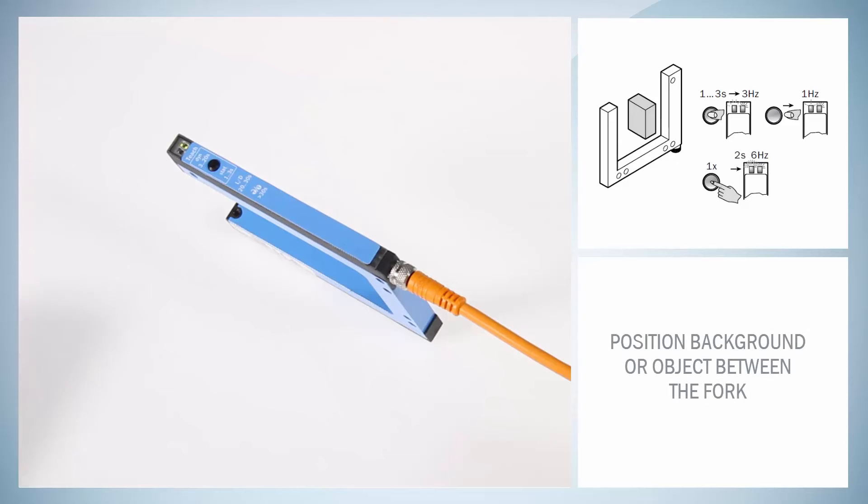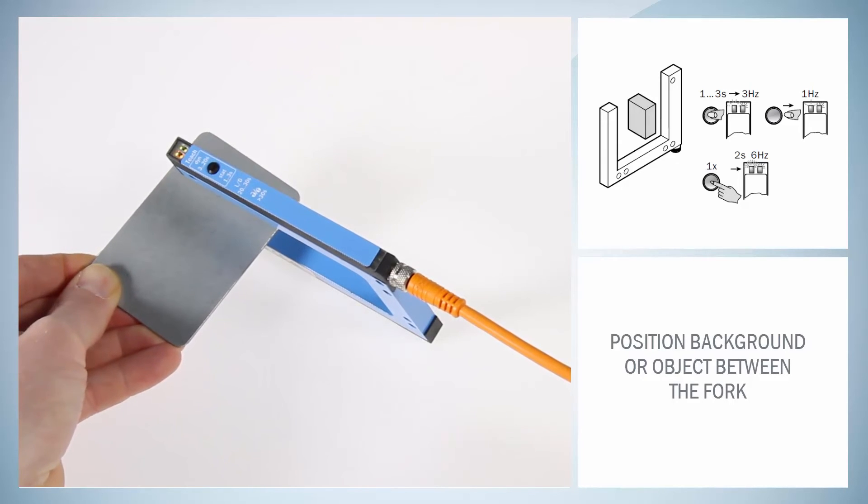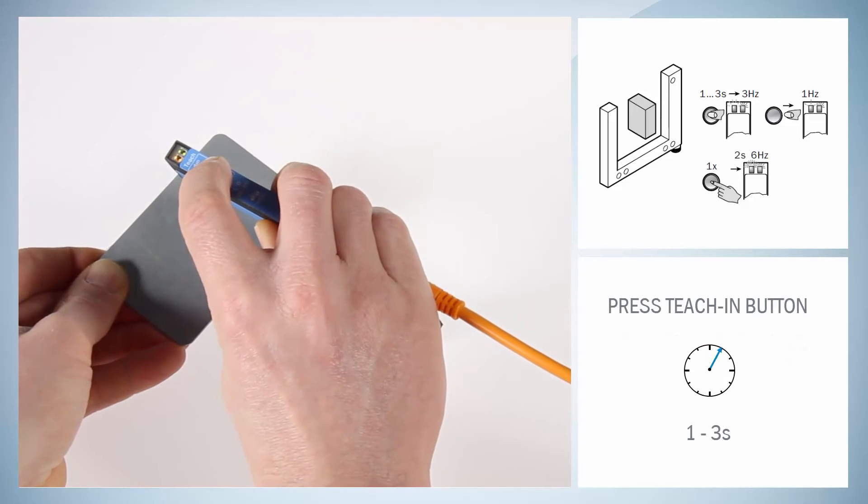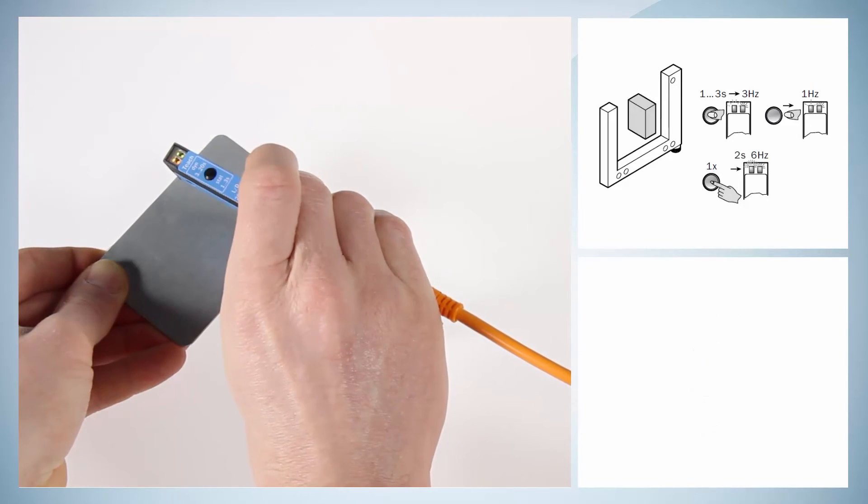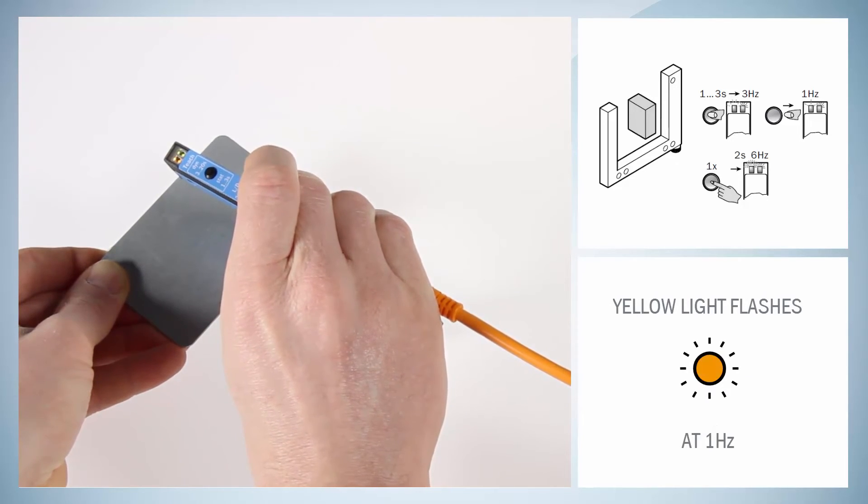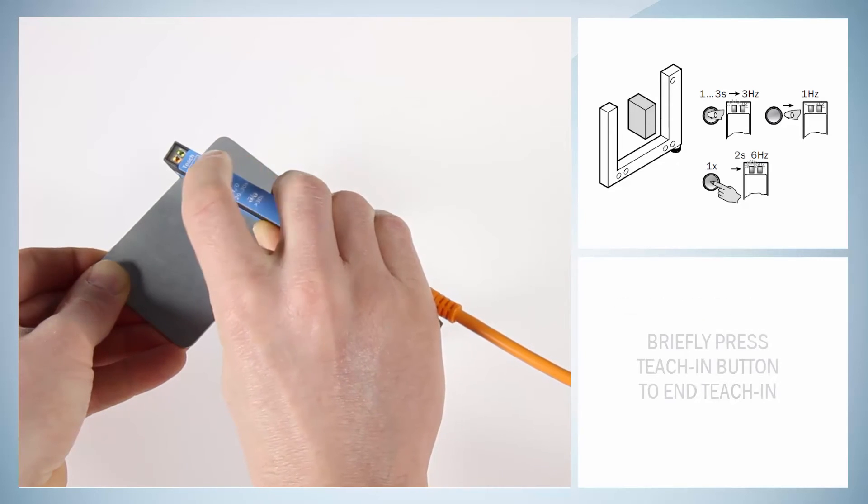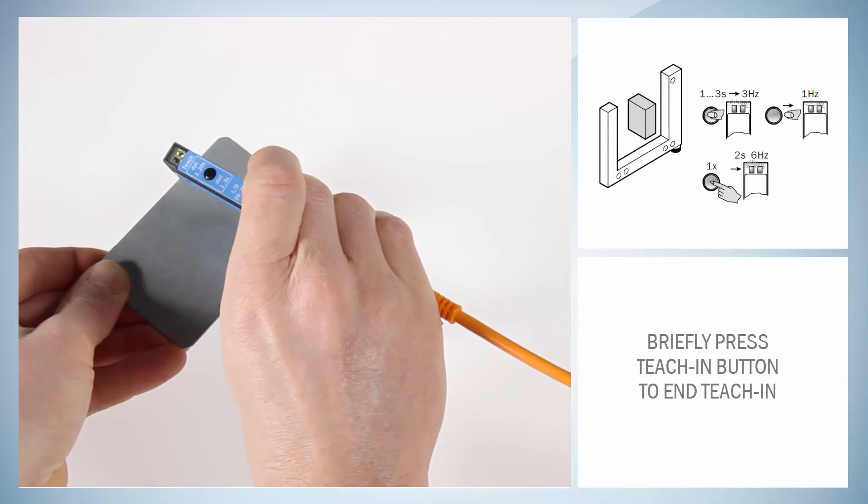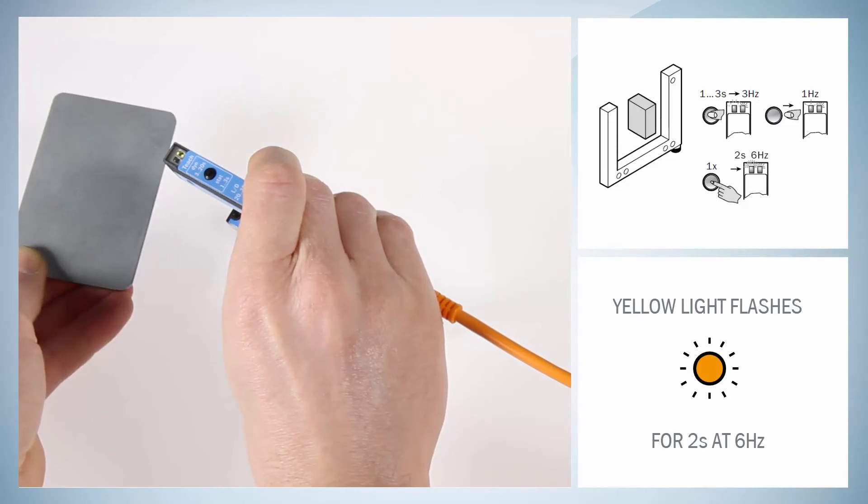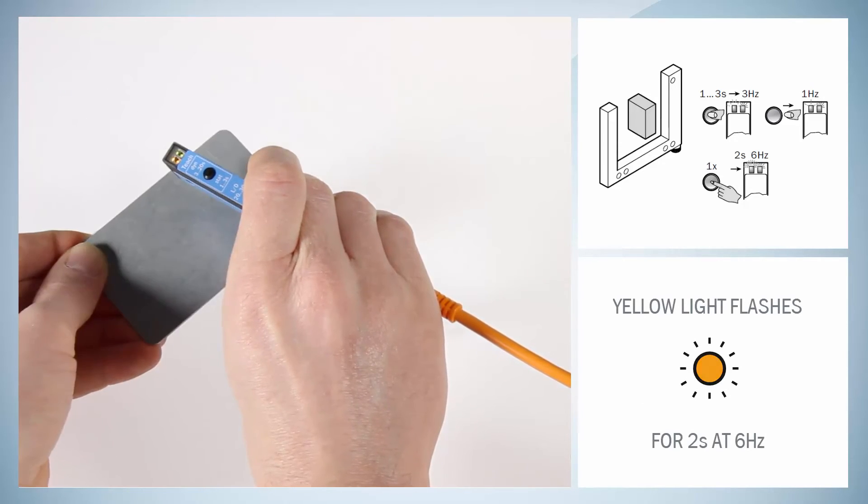To start the Teach-In, position the background or the object between the fork. Press and hold down the Teach-In button for 1 to 3 seconds and then release. The yellow LED flashes at 1 hertz. To end the Teach-In, briefly press the Teach-In button again. If the Teach-In is successful, the yellow LED flashes for 2 seconds at 6 hertz.